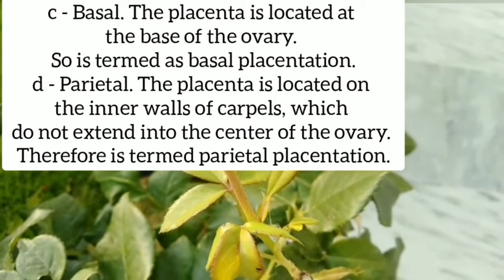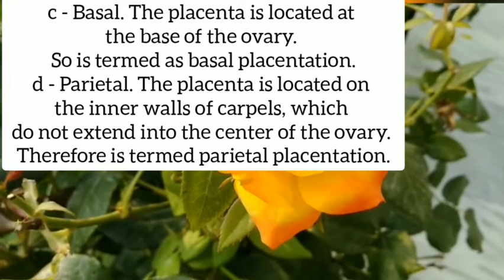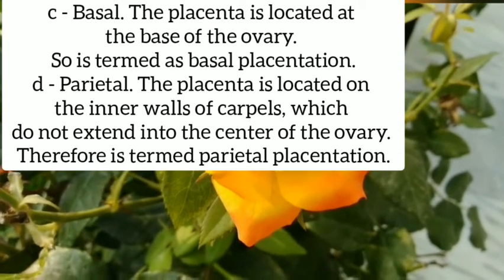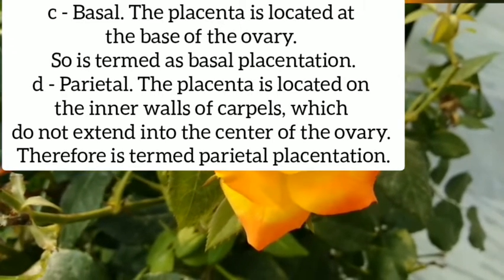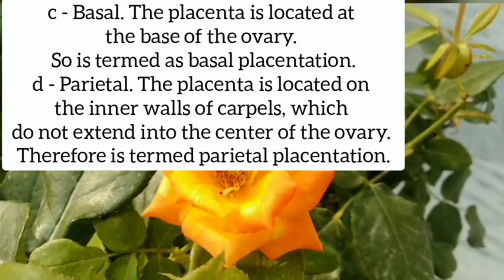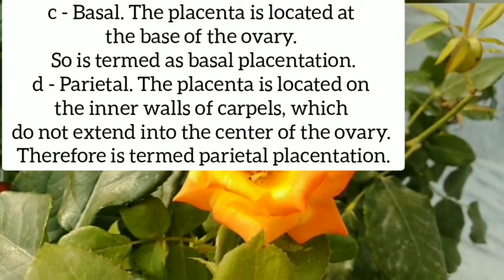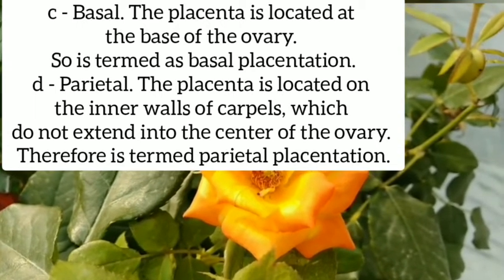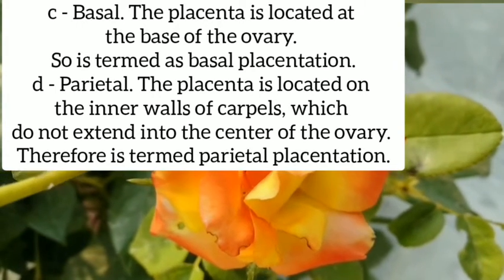Third, basal: the placenta is located at the base of the ovary, termed basal placentation. Fourth, parietal: the placenta is located on the inner walls of carpels which do not extend into the center of the ovary, called parietal placentation.